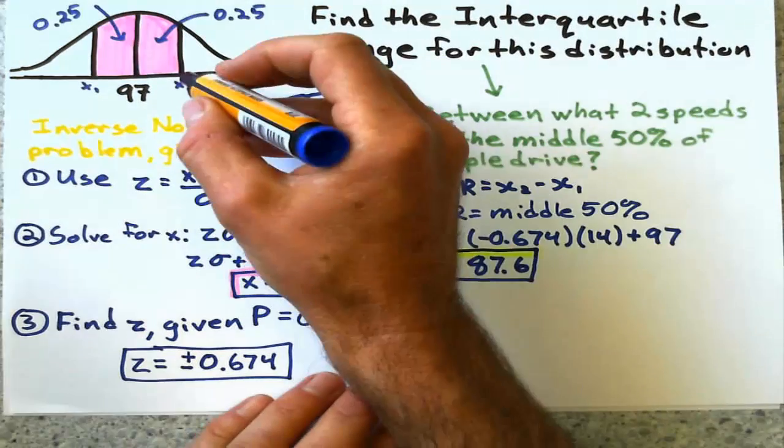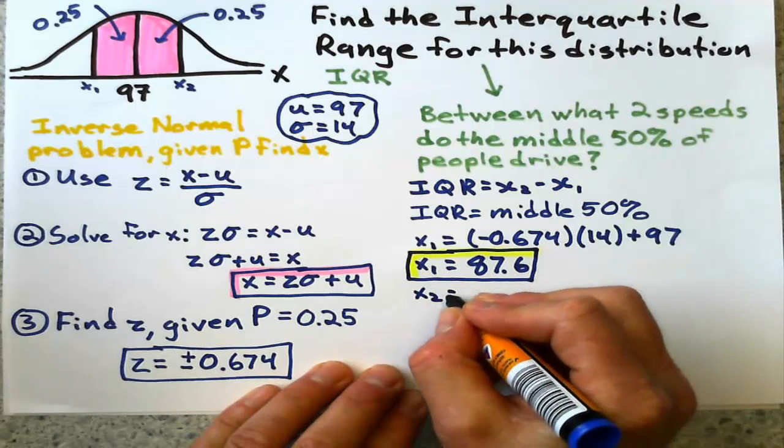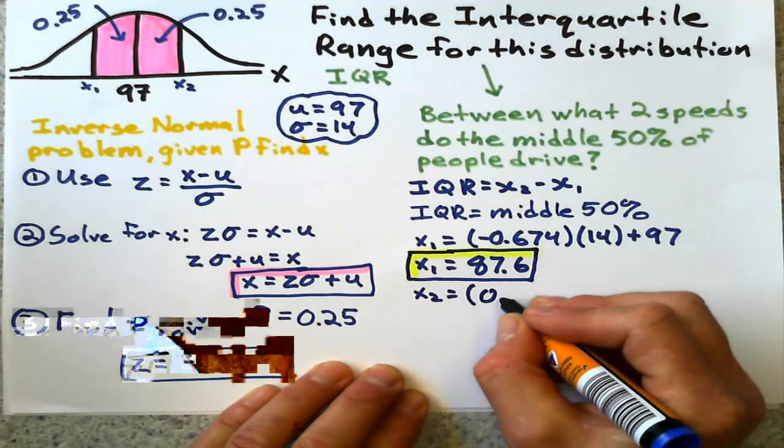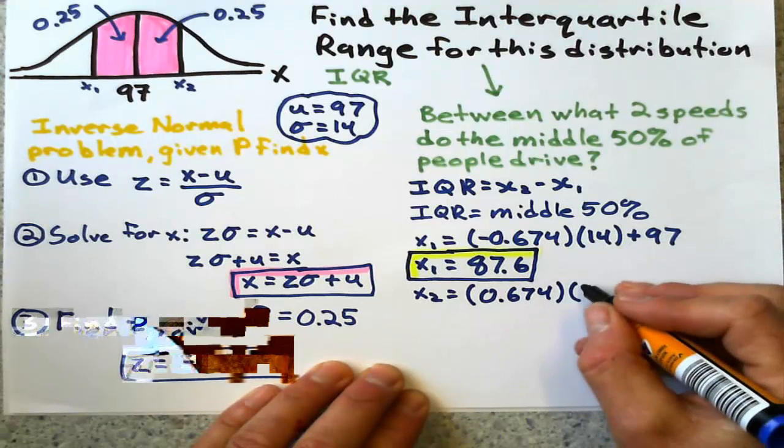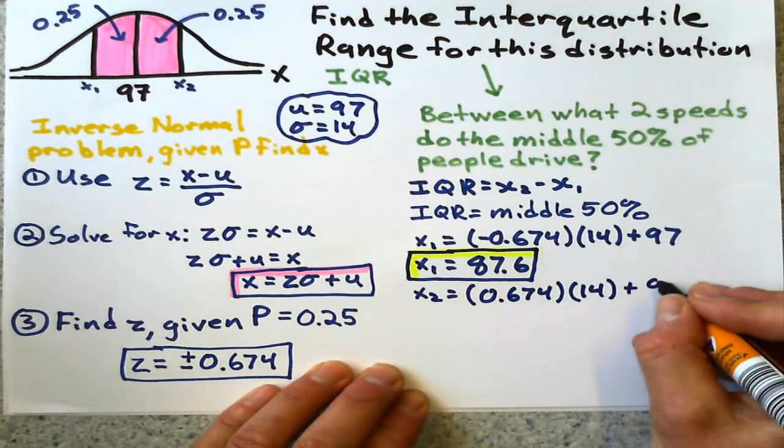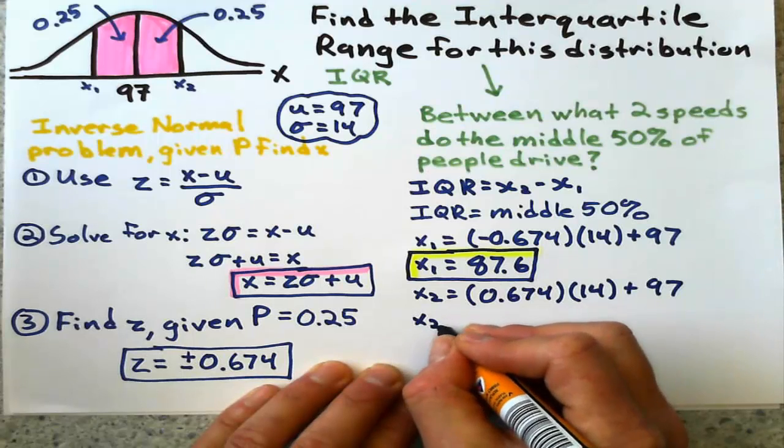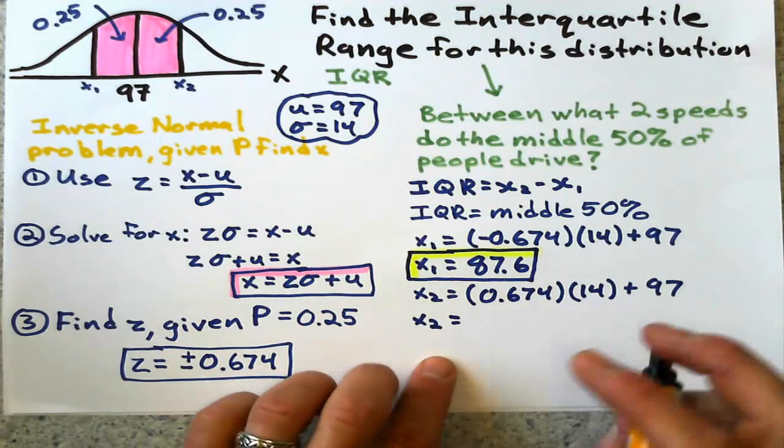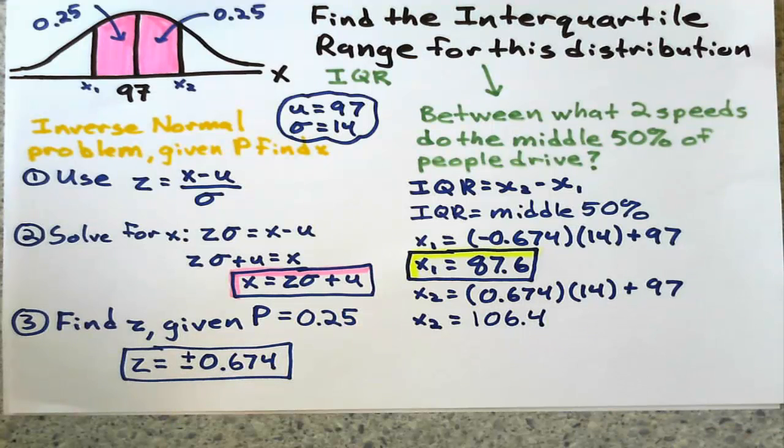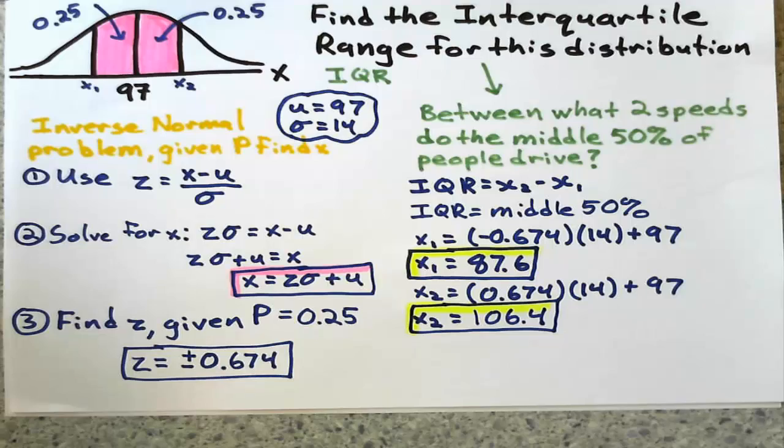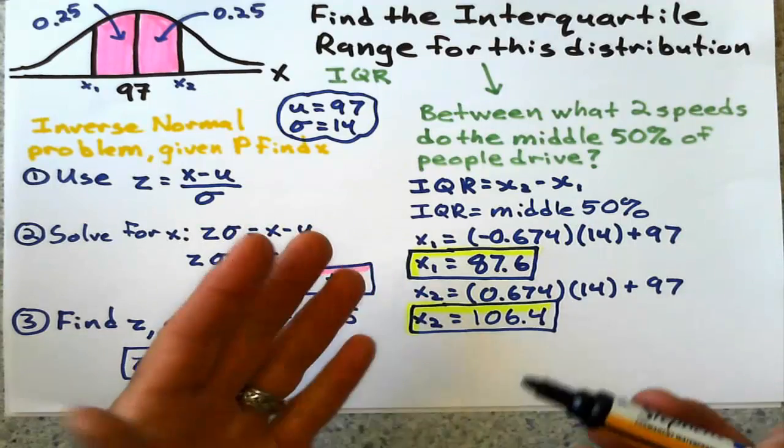The next value above the mean: substitute positive 0.674 times the standard deviation plus the mean again, and the speed that is above the mean gives me 106.4 kilometers an hour.